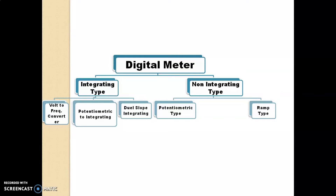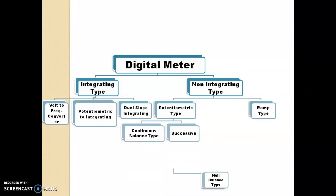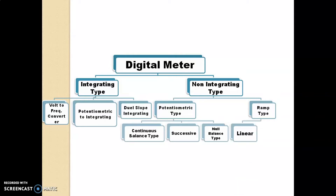In potentiometric type there are another three types: first, continuous balance type; second, successive type; and third, null balance type. And in RAM type of non-integrating digital meter, there are also two types: linear and staircase.